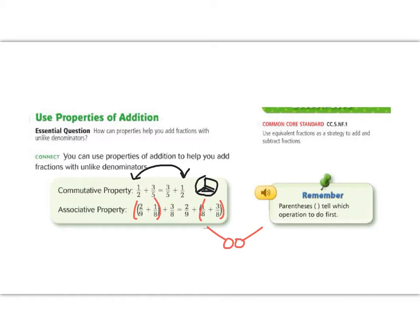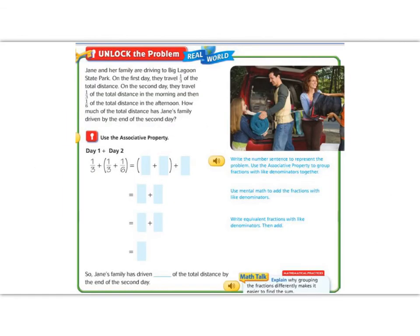Let's use this idea with fractions. Jane and her family are going to Big Lagoon State Park. On the first day, they travel 1 third of the total distance. On the second day, they travel 1 third of the total distance. In the morning, they travel 1 sixth of the total distance in the afternoon. How much of the total distance has Jane's family driven by the end of the second day? So we are going to add 1 third plus 1 third plus 1 sixth. Well, let's think about using the associative property to group our thirds together so that we don't have to change our denominators right away.